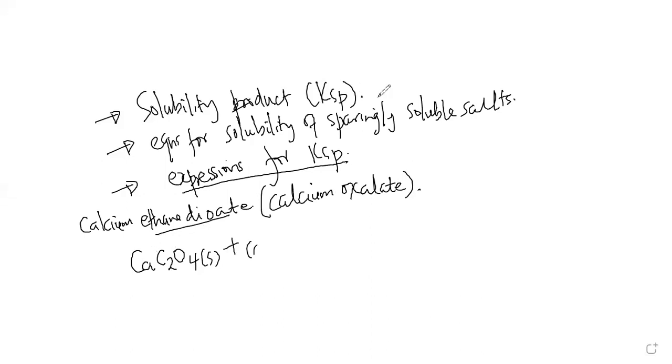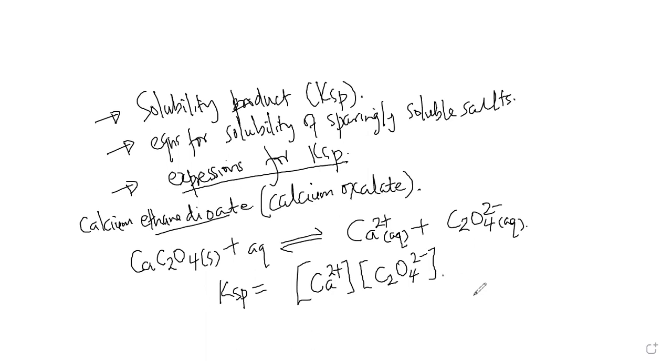If you write the equation for solubility of calcium ethandioate, it will be this kind of equation. We shall have calcium ions plus ethandioate ions. That is the equation. Then the expression for KSP will be calcium ions multiplied by molar concentration of oxalate ions. That's how we would write the equation and expression for solubility products.